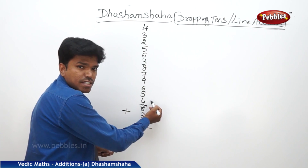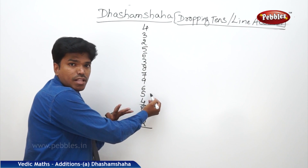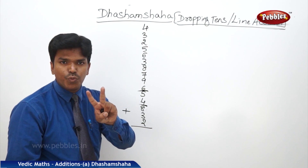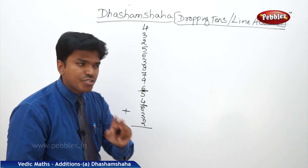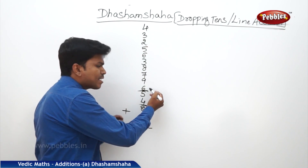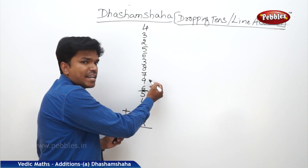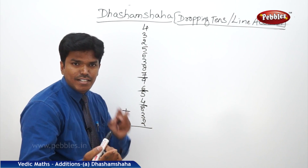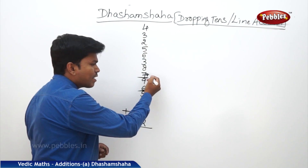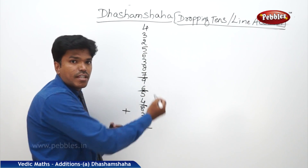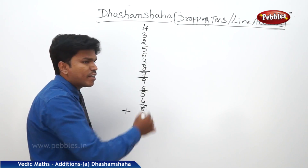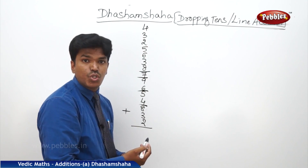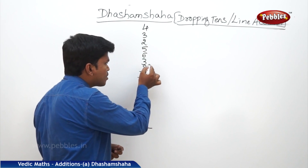What is 3 plus 4? 7. 7 plus 5? 12. Again more than 10, so drop a 10. Remaining is 2. Carry 2 to the next number. 2 plus 6? 8. 8 plus 9? 17. Drop a 10. Remaining is 7. 7 plus 7? 14. Again more than 10, so drop a 10. Remaining is 4. 4 plus 8? 12. Again more than 10, so drop a 10.